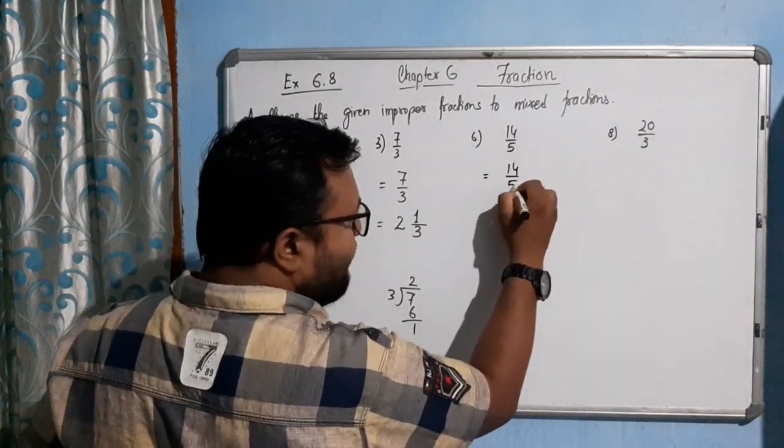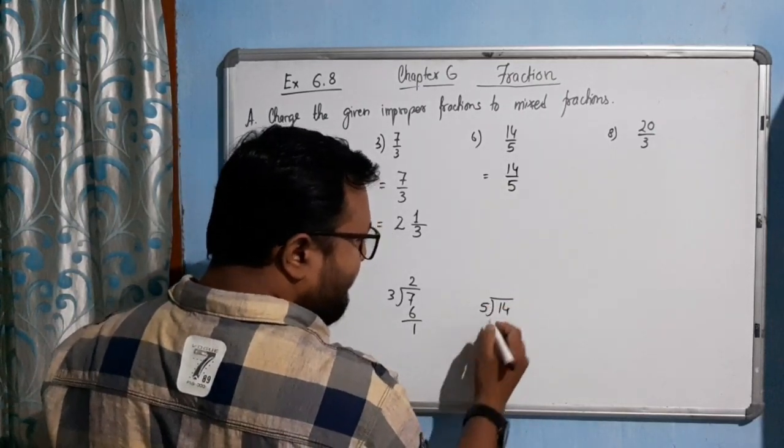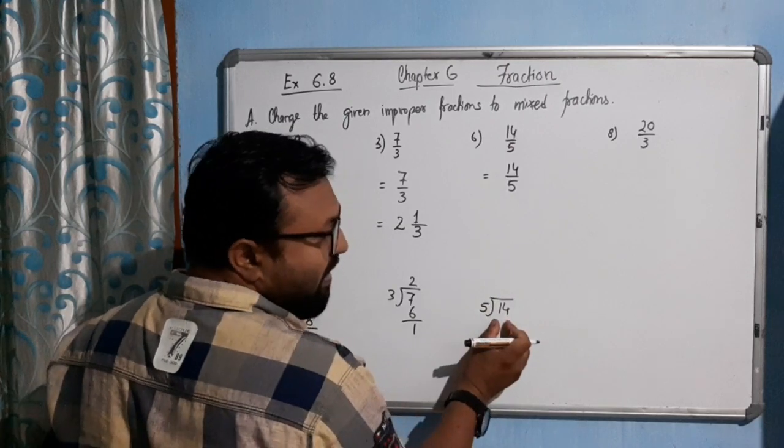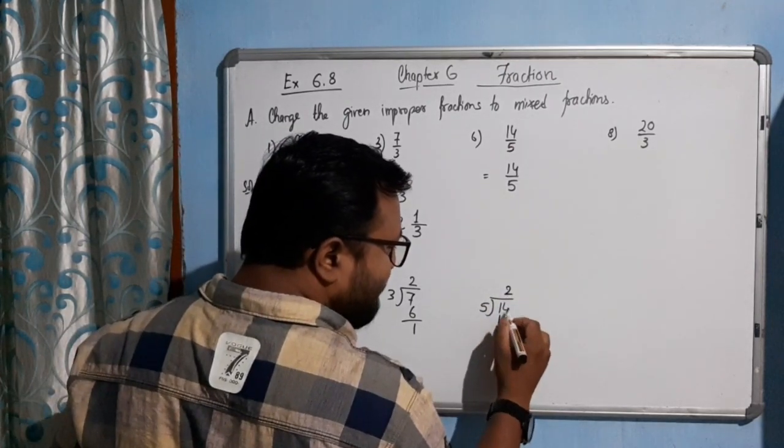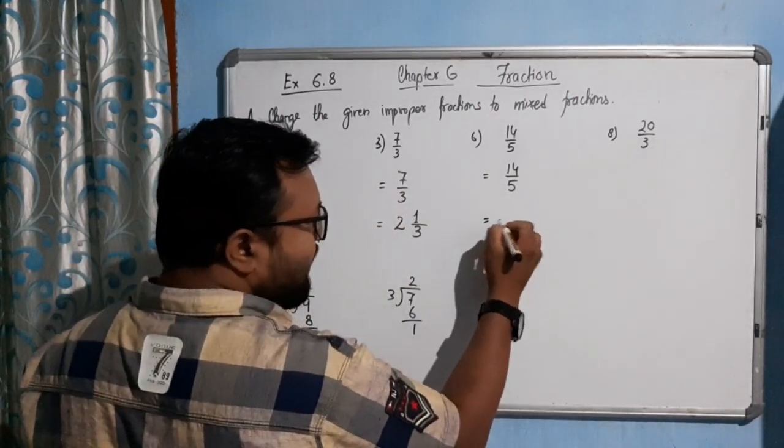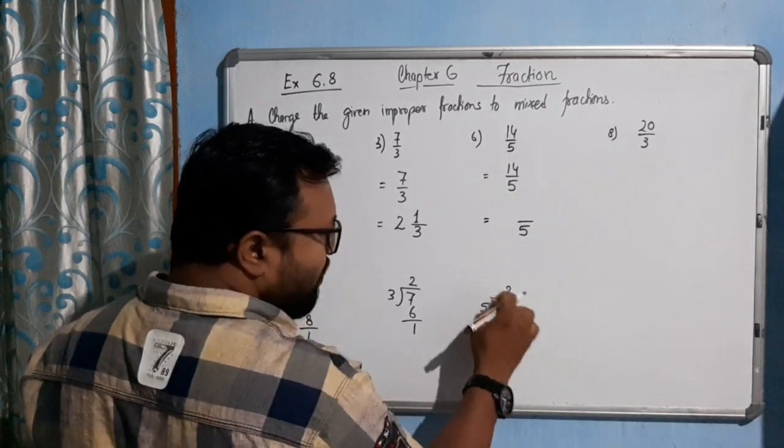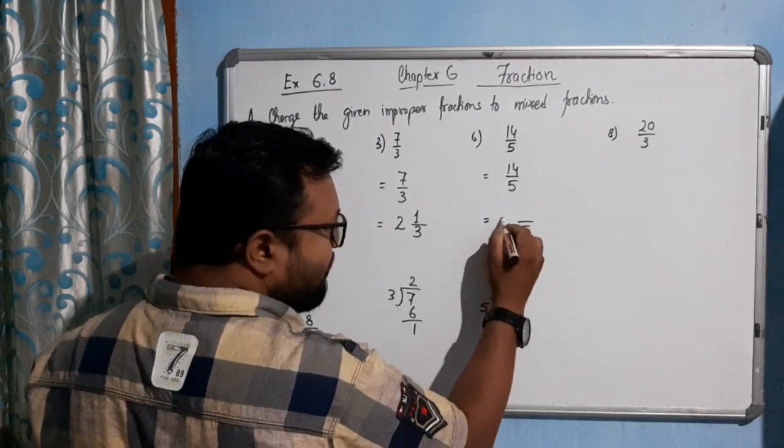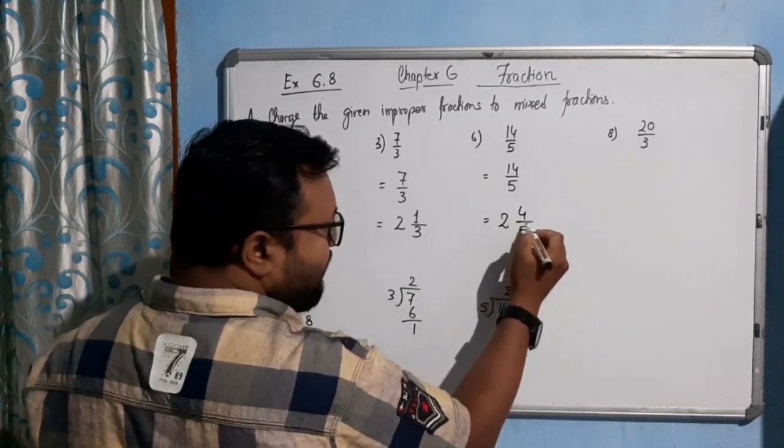Now come to this part: 14 by 5. See, 14 by 5. 5 times 3 is 15, which will be greater, so 5 times 2 is 10. We are getting 4 as a remainder. Once again, 5 is the denominator, so 5 will always be in the denominator. The quotient part will become our whole number, which is 2, and this 4 becomes our numerator. So 2 4/5. In this way we will convert.